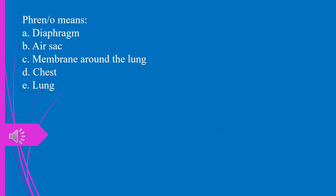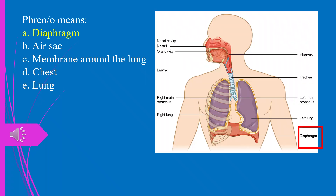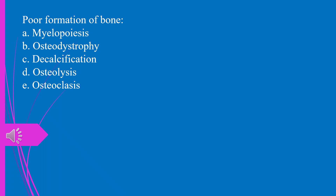Question 21. Phreno means: a) diaphragm, b) air sac, c) membrane around the lung, d) chest, e) lung. The answer is a, diaphragm.